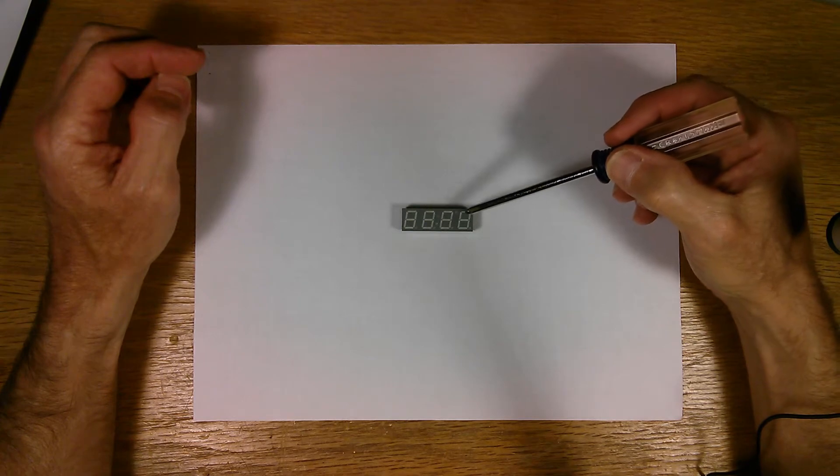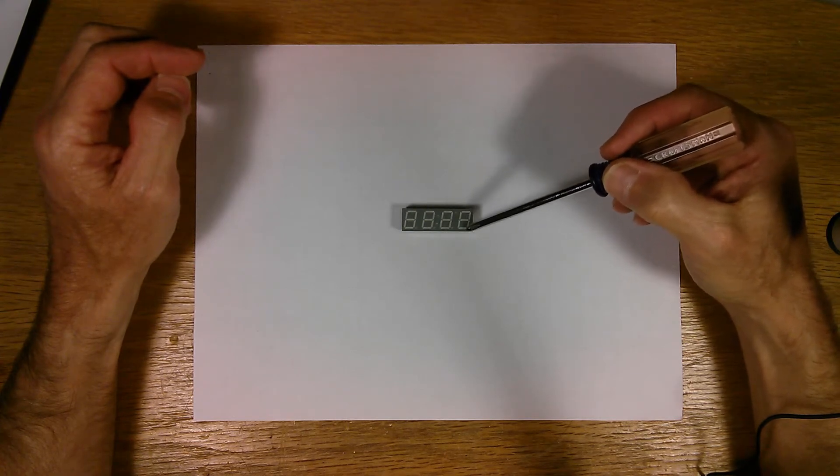So if we wanted a seven, for example, I can turn on this segment, this one, this one, and so we get a seven.